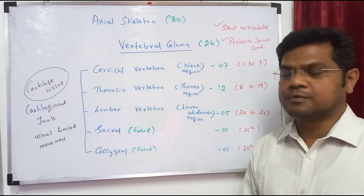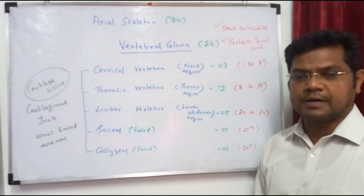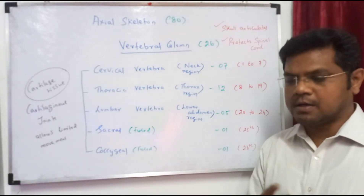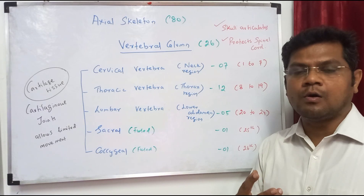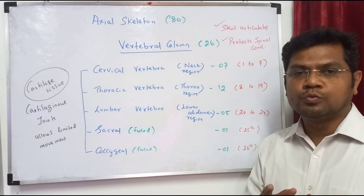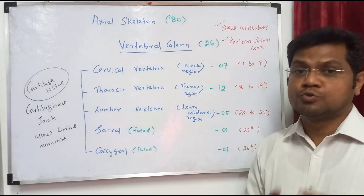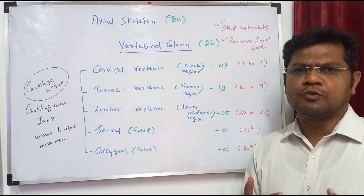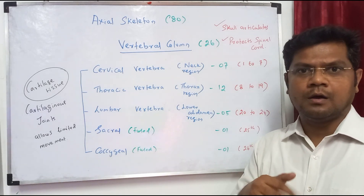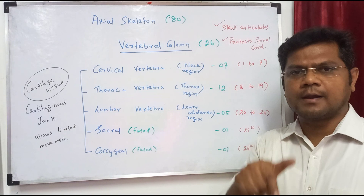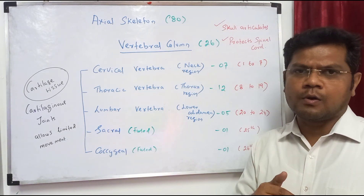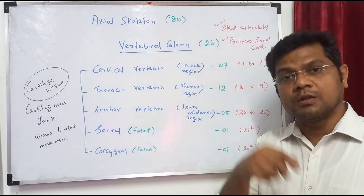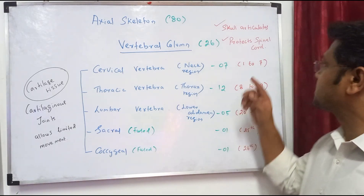In the axial skeleton, the vertebral column has 26 bones. Its main role is it holds the skull. The skull articulates with the vertebral column through the occipital condyle. The vertebral column protects the spinal cord.